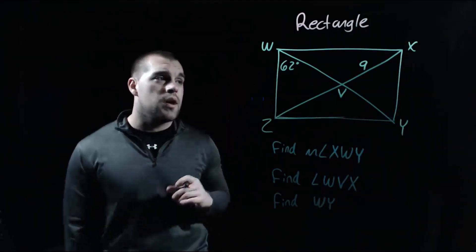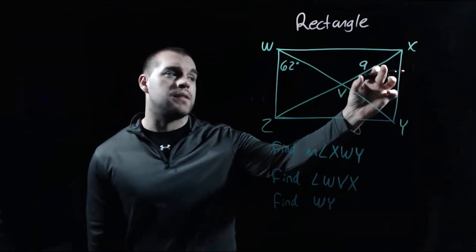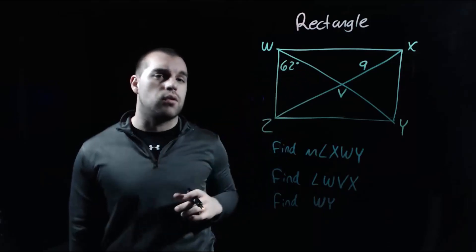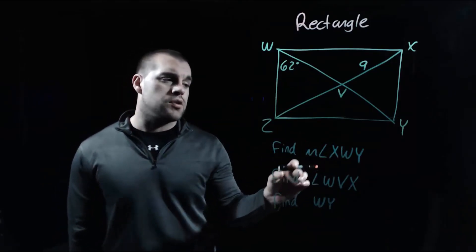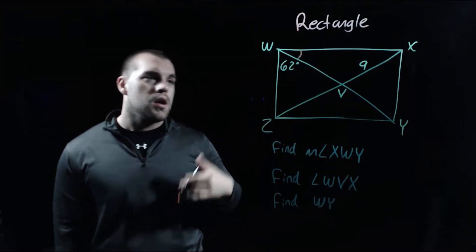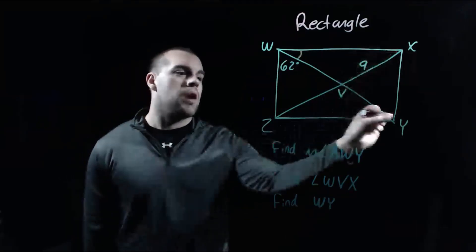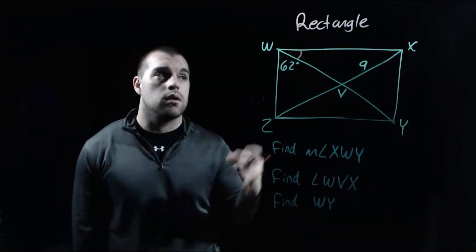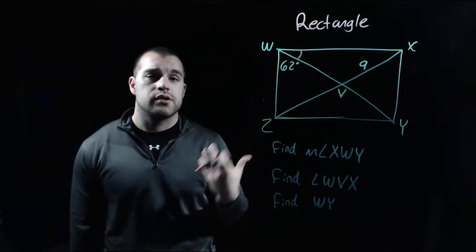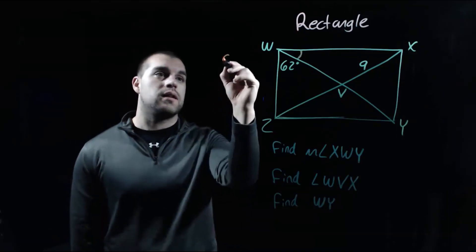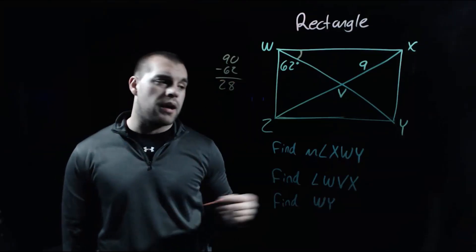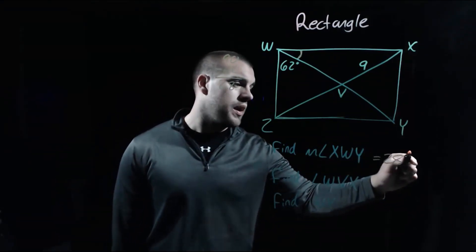In this example we're given a rectangle. The length from X to V is 9 and the measure of the acute angle in the top left-hand corner is 62 degrees. The first thing we want to find is the measure of angle XWY — that's this little angle up here. Every corner angle within a rectangle is a 90 degree angle, so we've used up 62 degrees and need to figure out how big that angle is so they add up to 90 degrees. So 90 minus 62 gives us a 28 degree angle. Angle XWY is 28 degrees.